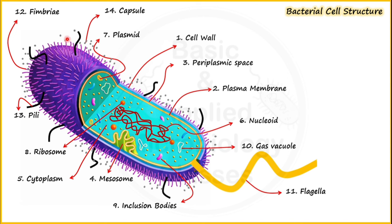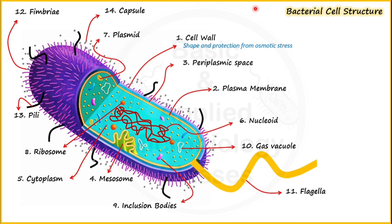That was all about an introduction to the structural components. Now in brief we are going to talk about the function of each structural component. Starting with the cell wall: in bacteria the cell wall is made up of a complex polysaccharide called peptidoglycan, and it plays a very important role in giving shape and protection from osmotic stress. On the basis of the nature of the cell wall, we can classify bacteria into two types — gram positive and gram negative bacteria.